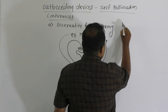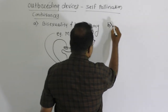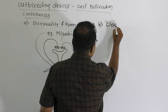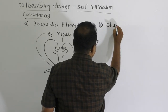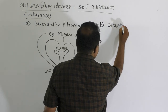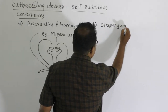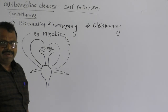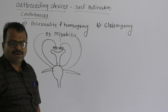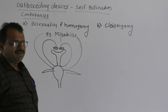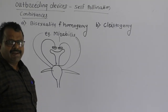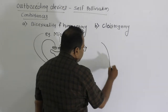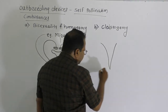The second modification is Cleistogamy. The plant example here is Commelina bengalensis.